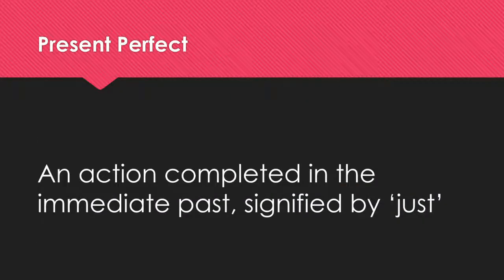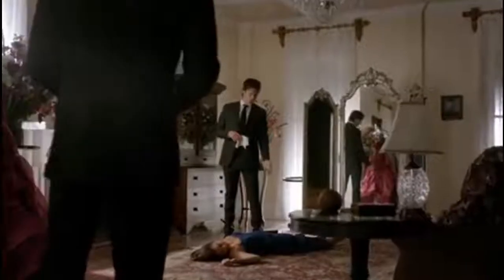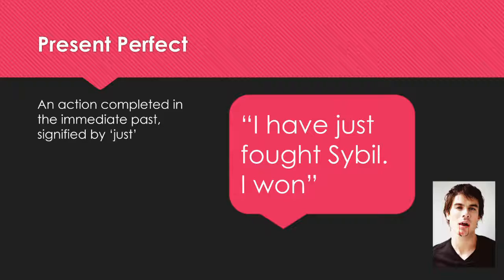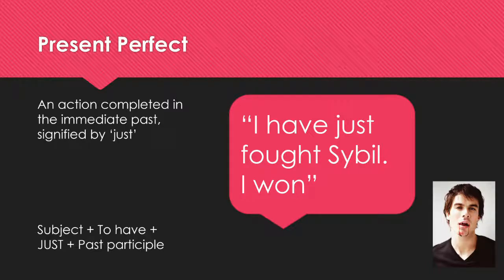Finally, we use the present perfect to describe actions completed in the very recent past, expressed by 'just': 'I have just fought Sybil.' Subject 'I' plus 'to have' plus 'just' plus past participle. You may have noticed that the speaker drops 'have' — we can do that only when using 'just' with the present perfect, because the 'have' is implied. It's more usual in spoken English than written, and it will make your speech sound more natural in an informal context.